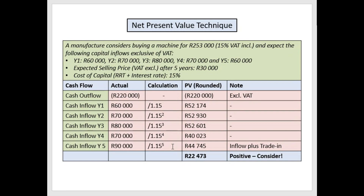In year five, please pay attention: it is not just the 60,000 that comes in. You must also add the 30,000 that you expect to get when you sell the machine for parts. That's why the amount in year five is 90,000. You divide 90,000 by 1.15 to the power of five and you get 44,745.